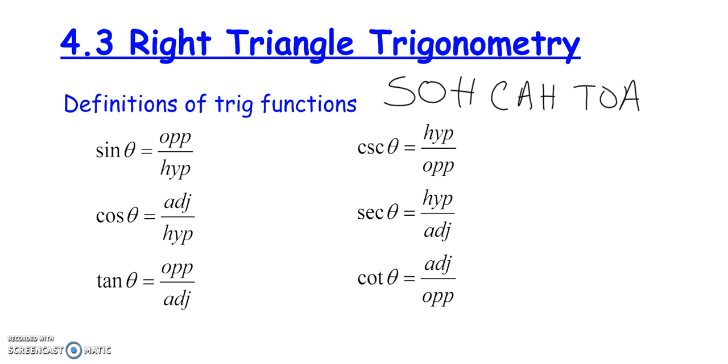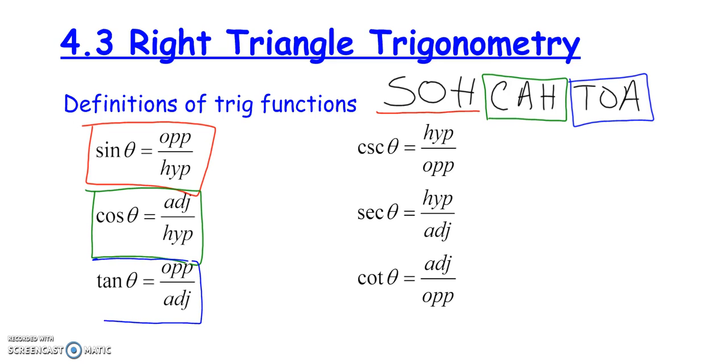Say it with three different syllables, because that SOH stands for a very specific definition. SOH stands for sine is equal to opposite over hypotenuse. CAH stands for the idea that cosine is adjacent over hypotenuse, and this is talking about triangles. TOA, T-O-A, stands for the relationship that tangent is the relationship of opposite over adjacent.